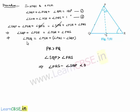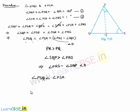Since angle SQP is greater than angle PRS, the term (angle PRS minus angle SQP) is less than zero. Considering our equation, angle PSQ equals angle PSR plus (angle PRS minus angle SQP), and since this whole term is less than zero, angle PSQ is less than angle PSR. Therefore, angle PSR is greater than angle PSQ, which is what we were required to prove.